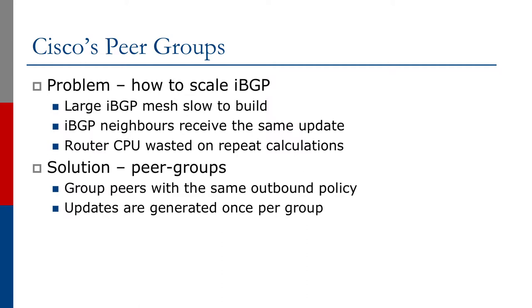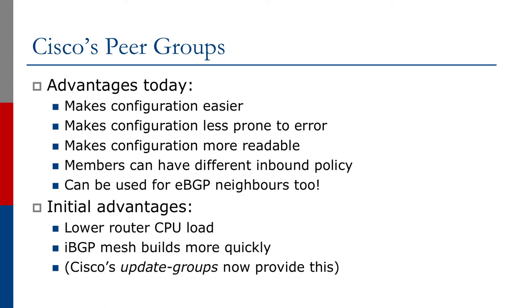What the Peer Group does is group peers that have the same outbound policy. The updates are calculated once and then sent out to all members of the group. The advantages we see even today are that a Peer Group makes configuration easier, less prone to error, and more readable, because we're grouping the same configuration shared amongst all peers in one place and then using that configuration to calculate the updates for all those peers.